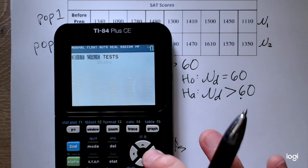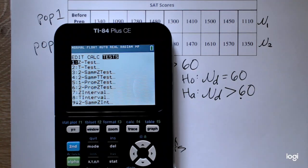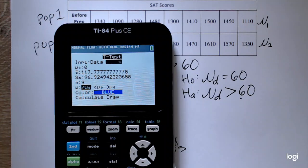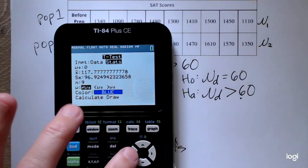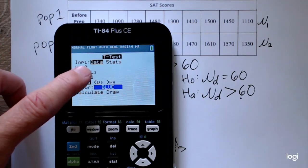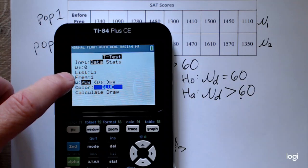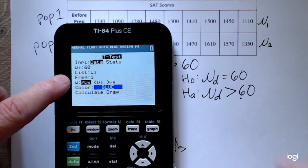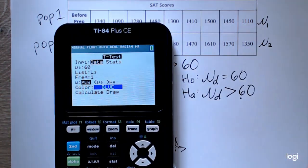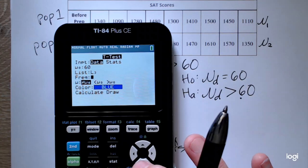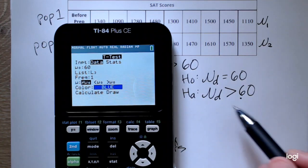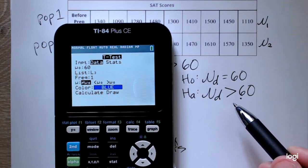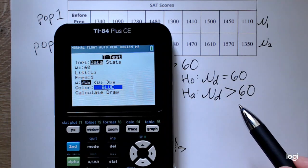So I'm going to my stat menu, arrowing over to tests, and option 2 is the t-test. I either have the summary statistics or I have the data in the list. I could have copied the summary statistics from my one variable statistics screen, but to be quick about it, I'm going to run this hypothesis test off of the new data that I created in list 3. This mu sub 0 is the hypothesized or claimed difference, and I want that to be 60. And my data is in list 3. I can go ahead and change that if I want, leaving this frequency alone. Here I can change my direction of alternative. I've determined through the wording of this problem, this is an upper tail test, and I was consistent with that with my subtraction.